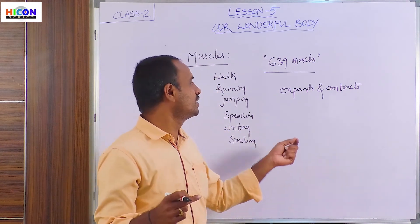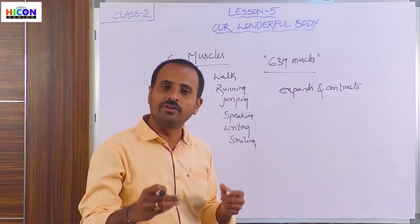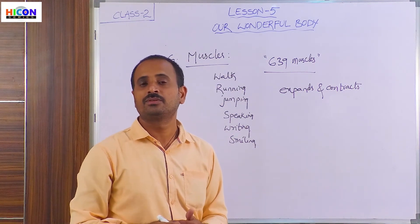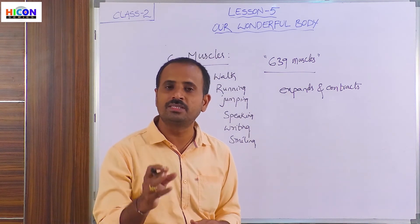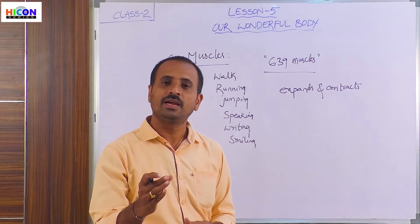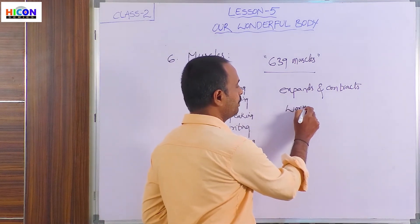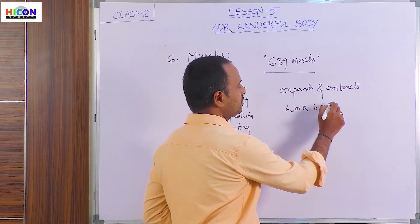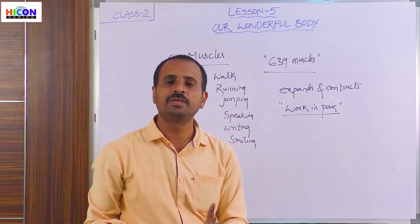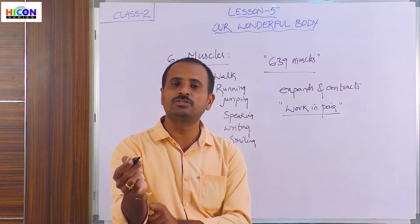Because of these expansions and contractions of the muscles, we are able to do and perform different activities in our daily life. Generally there will be 2 muscles attached at each joint, so the muscles work in pairs. That means at each joint of the bone, there will be 2 muscles present.